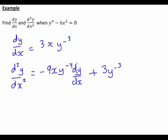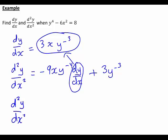But we remember dy dx we found earlier was just 3xy to the negative 3. So we simply substitute that in to our expression for the second derivative, which in this case means the second derivative becomes negative 9xy to the negative 4 multiplied by 3xy to the negative 3, subbing that in there for the dy dx part of this, plus 3y to the negative 3.